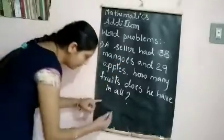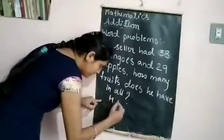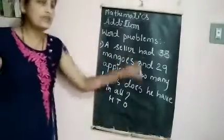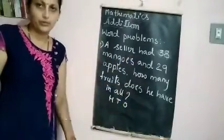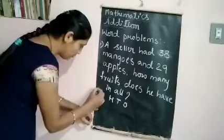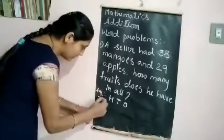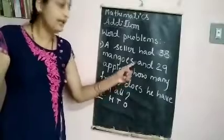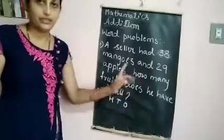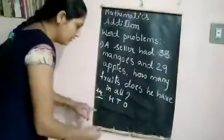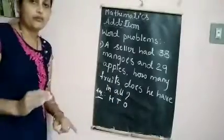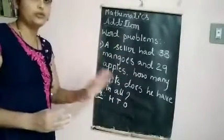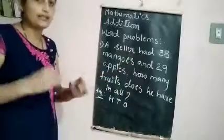What you have to do is first take the tens and ones columns. You have to write what is given in the sum. It is given 38 mangoes and 29 apples. To find the total, you have to add what is given. When you add the numbers, you will get the total.